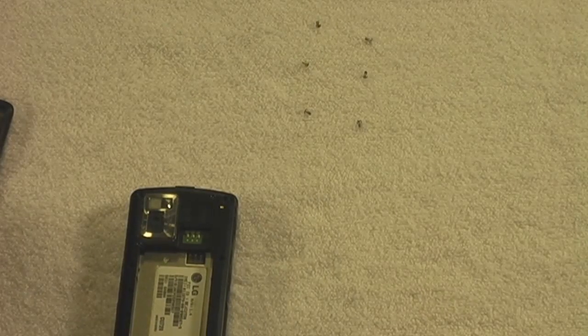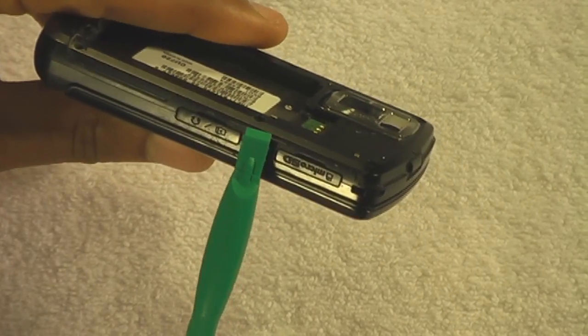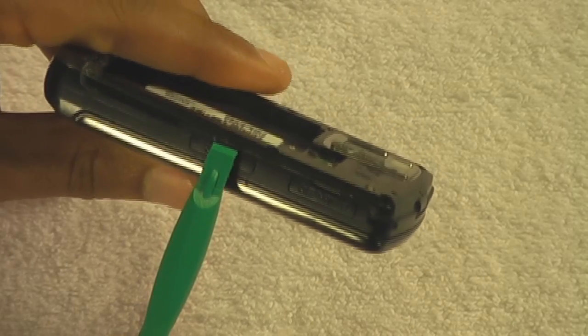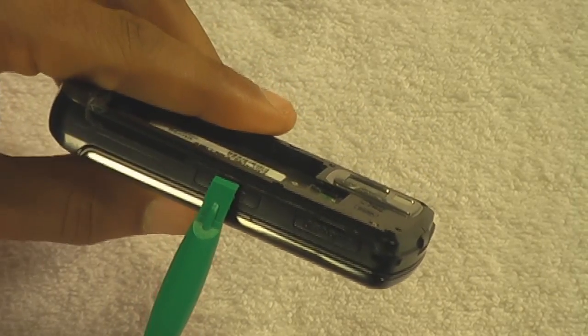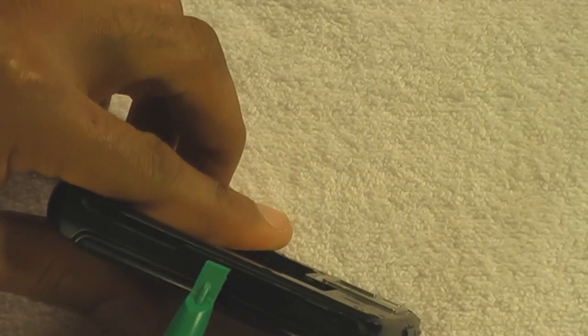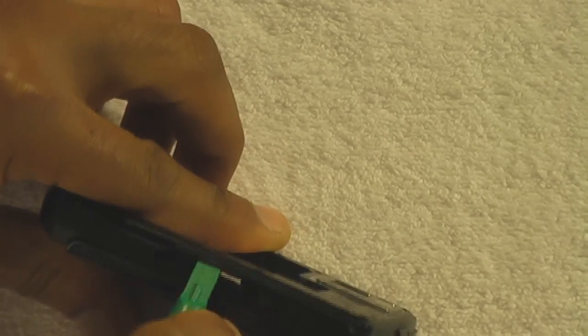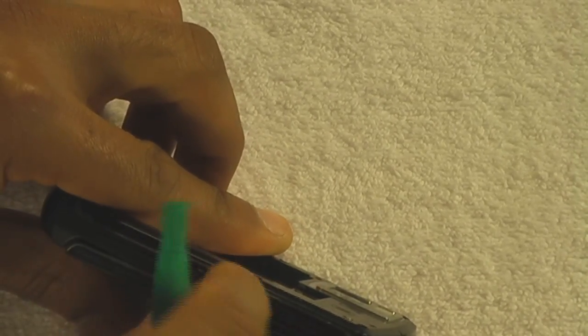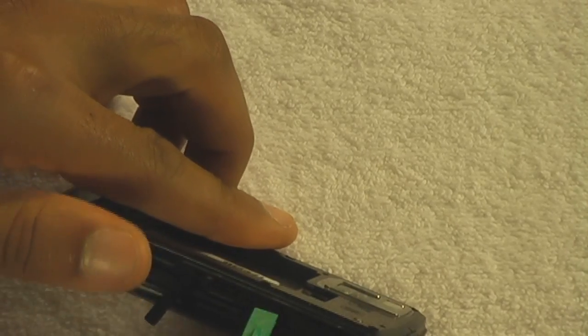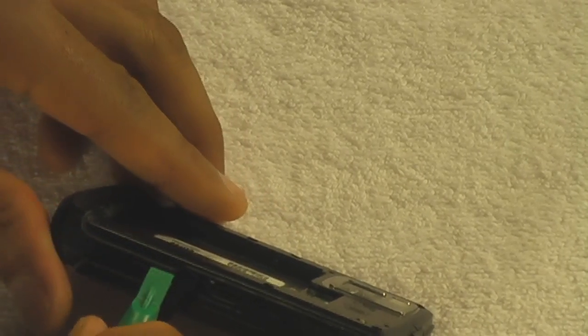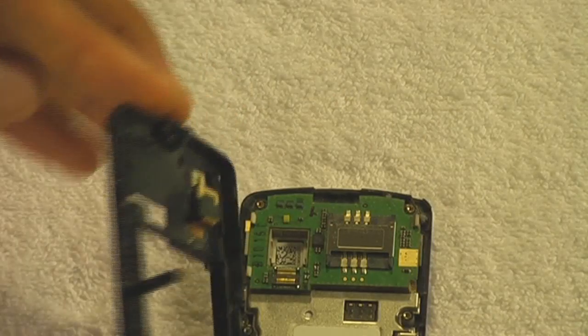Okay. Now take the plastic pry tool and remove the rest of the back of the phone. Start right there where the USB connection is. Basically just insert the tip of it and start to separate the back plate from the rest of the phone. Just work your way around the edges. Once you work your way all the way around, you can take that back cover off.